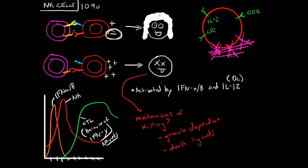So a normal cell expressing class I MHC receives an inhibitory signal and is spared — it keeps living. On the other side, a virally infected cell with down-regulated class I MHC has no inhibitory signal. The ligand binds the activating receptor, positive signals are generated, and that cell is targeted for killing.